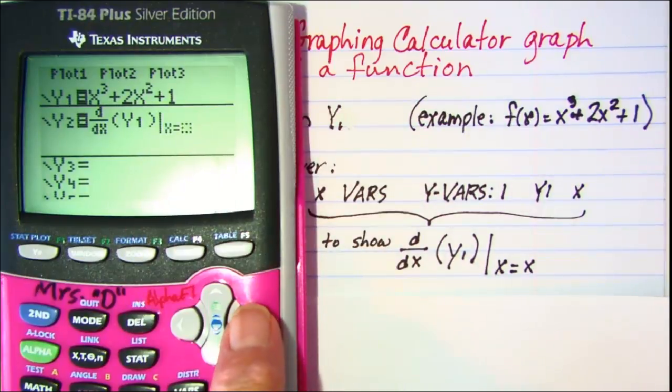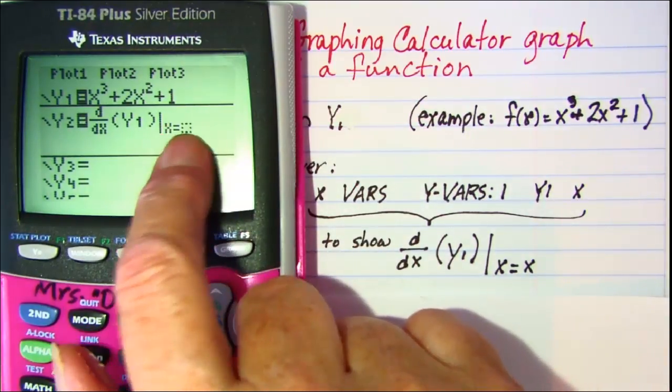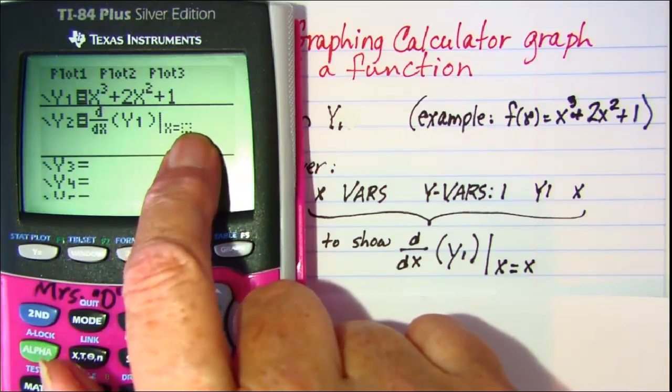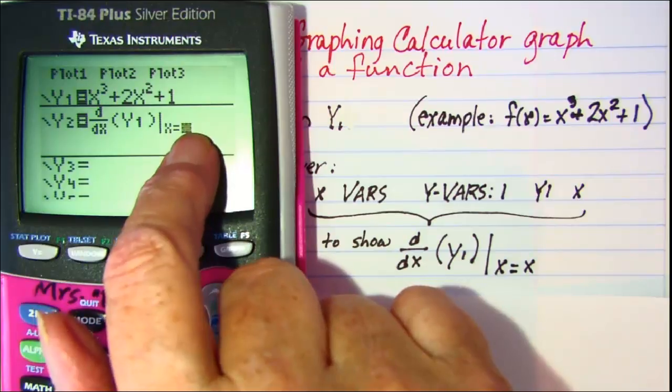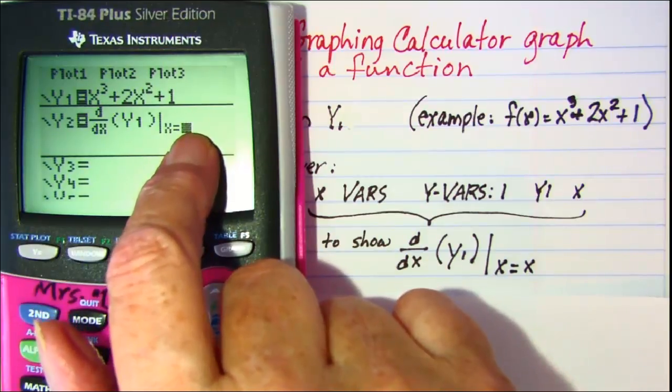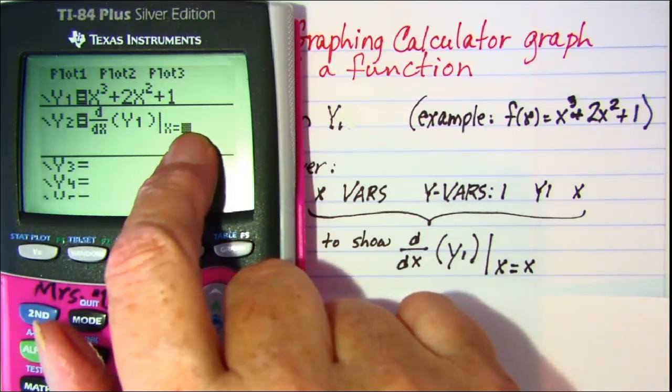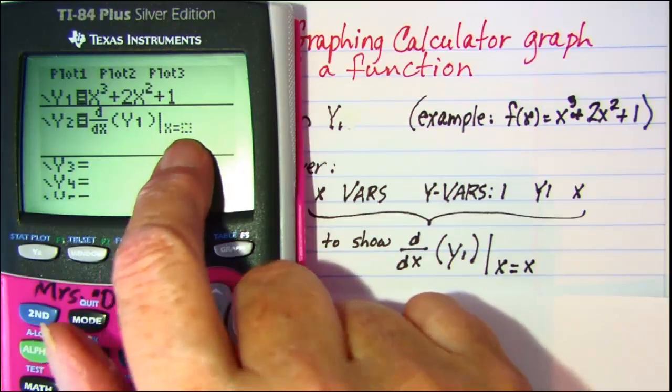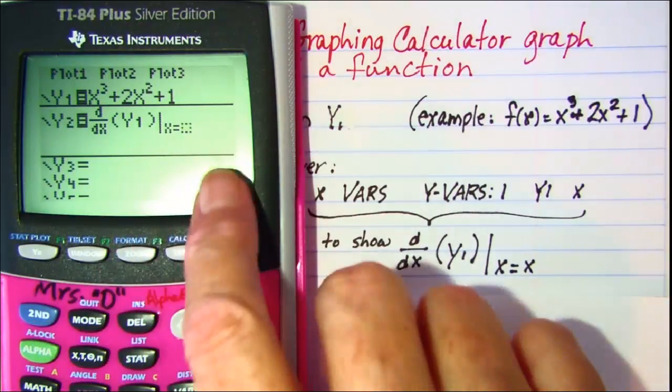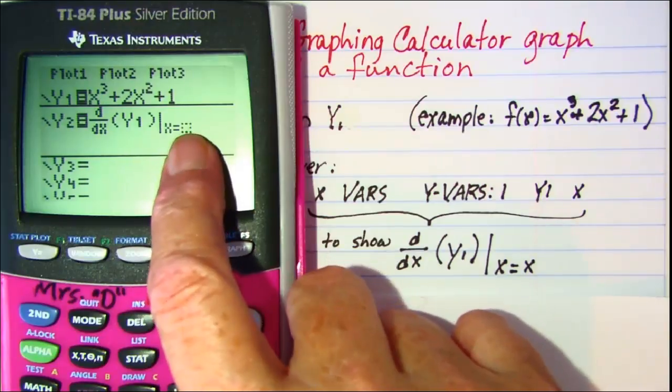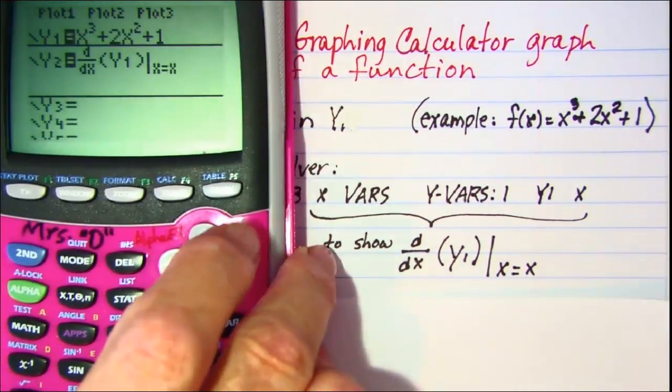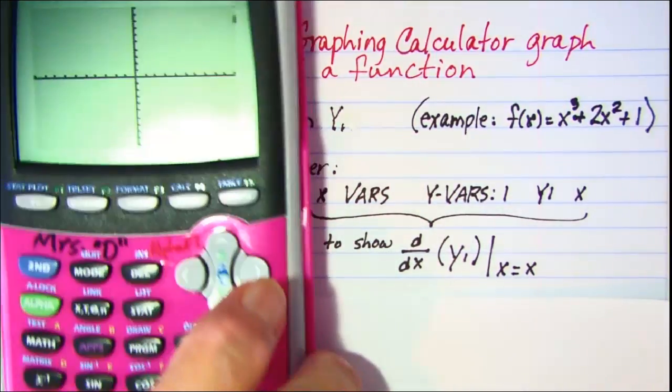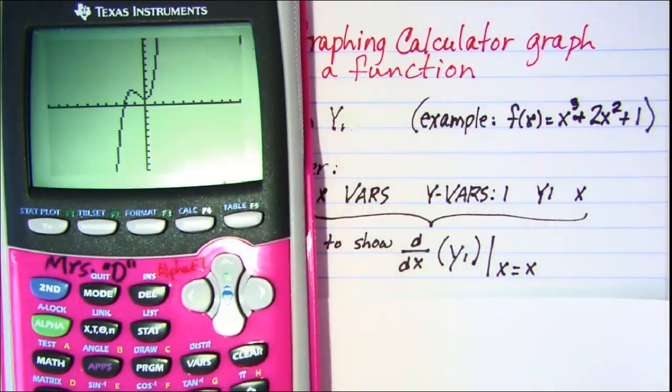So you want to go over to y variables, and then because it's our function rather than any of these, we'll just press enter and choose the y1. Now we have y1 in our parentheses. We still need to put an x down here in this box. So just move to the right, and what this would do if you put a number here, it would calculate the derivative of this function at that specific number. But what we want it to do is graph the derivative, which means we're not saying a specific x value. We just want it to go with all of the x's. So we'll just put an x there. And then when you press enter the calculator will graph. There's our function and then there's our derivative.